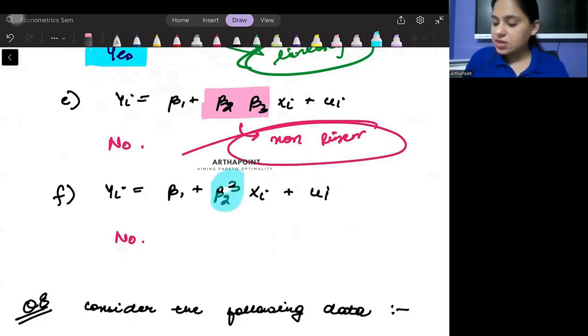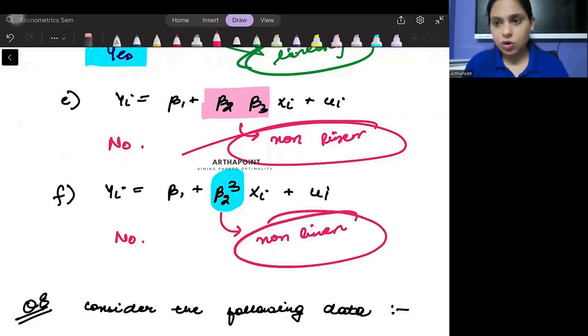Okay, similarly, see here. So I will have beta to the power 3 here, again reflecting that this is a non-linear model. So whenever the betas come non-linearly, it becomes a non-linear model. Wherever the x's come non-linearly or y's come non-linearly, but betas come linearly, it remains a linear model.